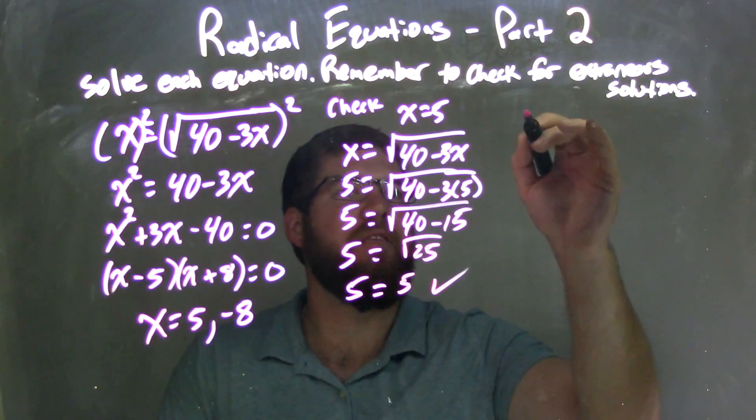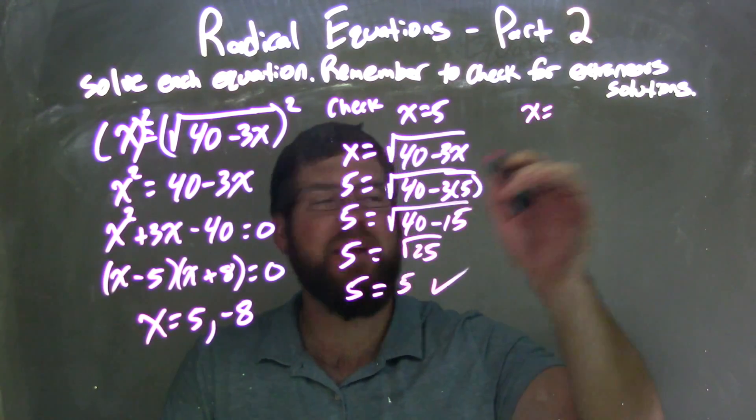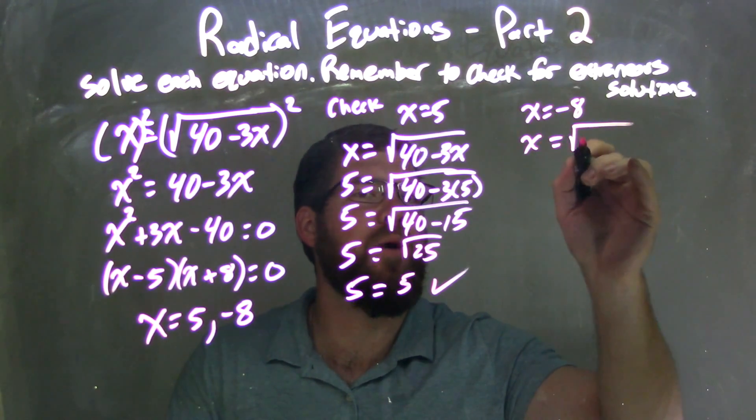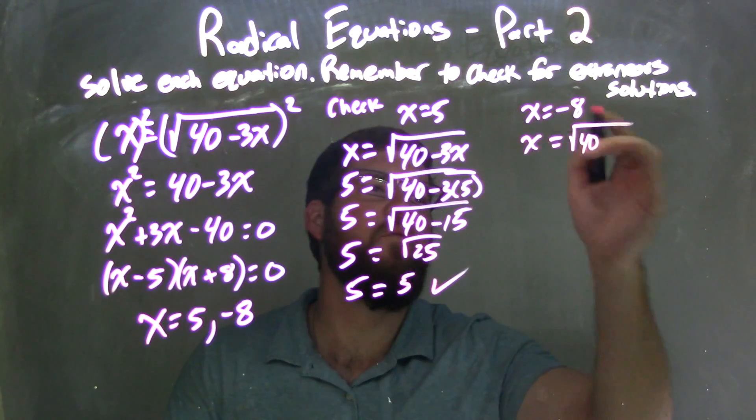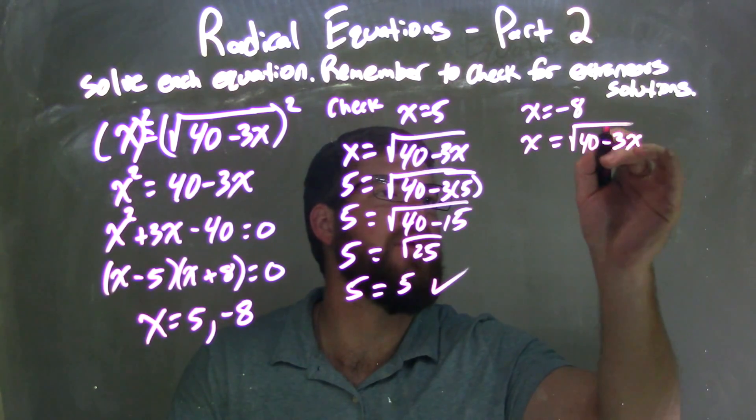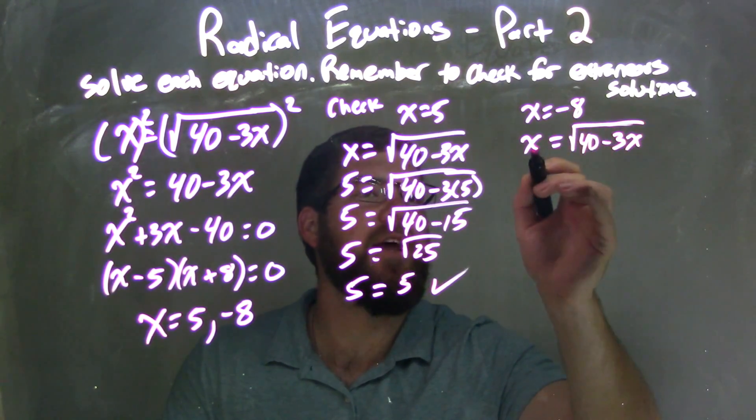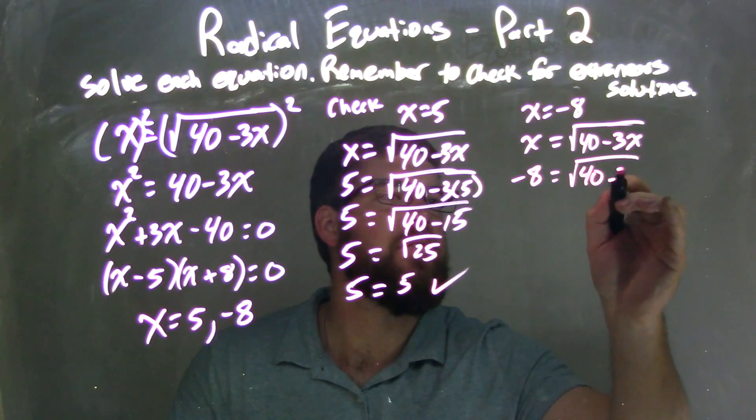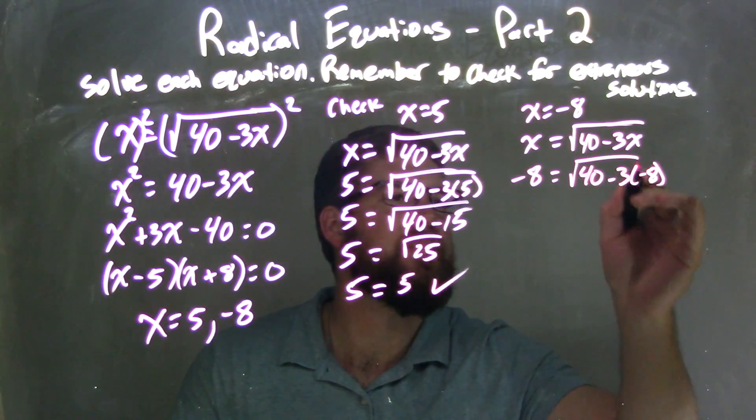Let's try the next one, negative 8. We have two answers, but we've got to check both of them. X equals square root of 40 minus 3x. Please take your time, rewrite the equation. Let's not skip any steps. Negative 8 goes in for x: negative 8 equals square root of 40 minus 3 times negative 8.